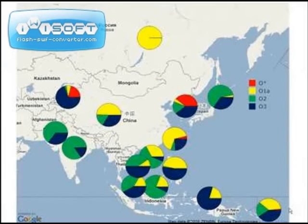Now that you have located your subclade within haplogroup O, let's delve into a more refined analysis of the frequency distribution of haplogroup O. The first step is to take a broad approach and examine the relative frequency distribution of the four main lineages: paragroup O star shown in red, subclade O1A in yellow, subclade O2 in green, and subclade O3 in blue.